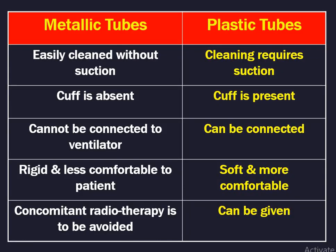Differences between metallic and plastic tracheostomy tubes: metallic tubes can be easily cleaned without suction but plastic tubes require suction. Cuff is absent in metallic tubes but present in plastic tubes. Plastic tubes can be connected to a ventilator; metallic tubes generally cannot. Metallic tubes are rigid and less comfortable; plastic tubes are soft and more comfortable. Concomitant radiotherapy must be avoided with metallic tubes as they absorb radiation, whereas radiotherapy can be given with plastic tubes.